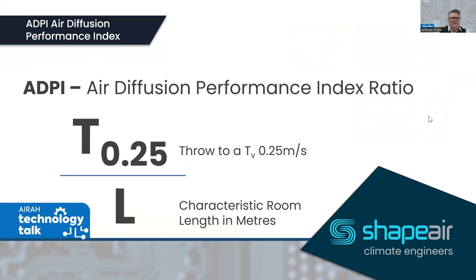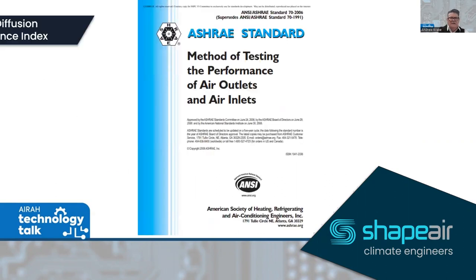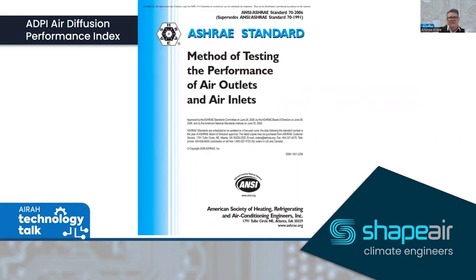The ADPI method uses the formula: throw to 0.25 m/s divided by the characteristic room length (T₀.₂₅ / L). This is used to either design using the ADPI method or to validate a design. To do this, you need air diffusion equipment tested to ASHRAE Standard 70.